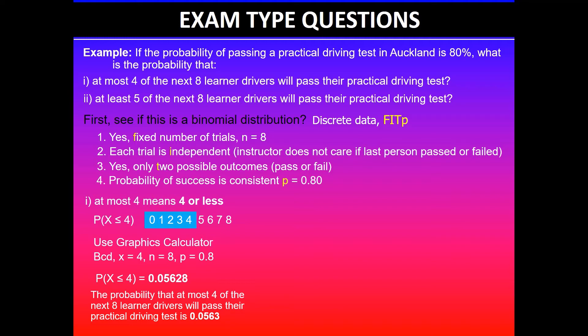What is the probability that at least five of the next eight learner drivers will pass their practical driving test? At least in this case means five or more, and five or more means greater than or equal to five. So that takes all the discrete values between zero and eight, and it's greater than or equal to five. So we'll have five, six, seven and eight. I'm stopping at eight because we were told that there were eight learner drivers.